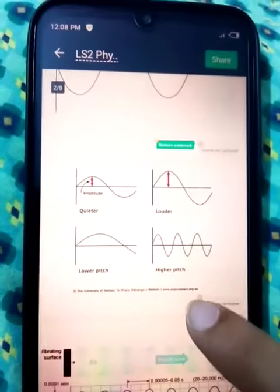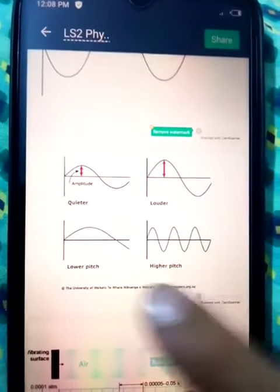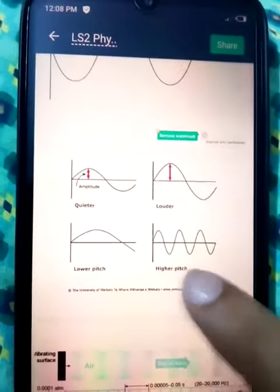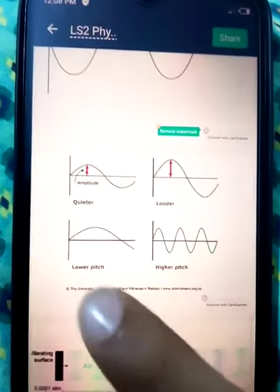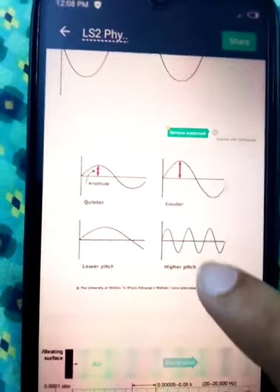After that, we discuss about quieter, louder, and the pitches of the wave. Like in this example, you can see that the wave shows the lower pitch, and in this example, in this graph, you can see that it's a higher pitch wave.